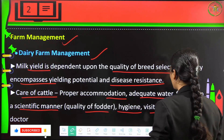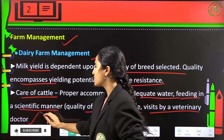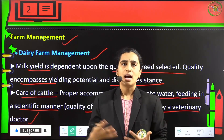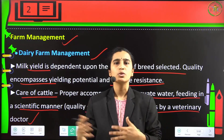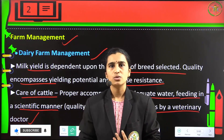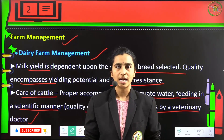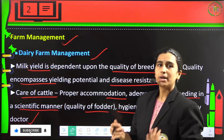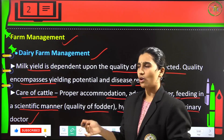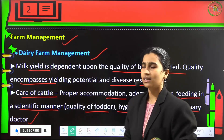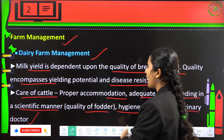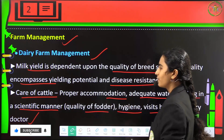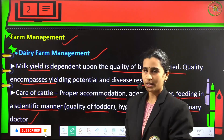Hygienic conditions and visits by a veterinary doctor are very important. Just like how we raise our kids, animals should be raised similarly. We have to take them to veterinarians to check if they are healthy, maintain hygienic conditions to avoid disease, and maintain fodder quality to ensure milk quality is not reduced.